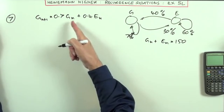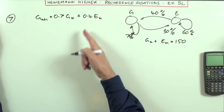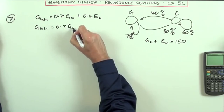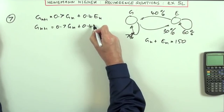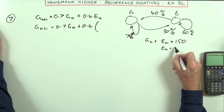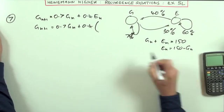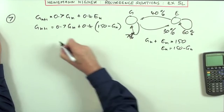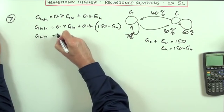Which means if I want to express this just in terms of G_n, I can rearrange that. I've got G_n+1 will be 0.7 G_n plus 0.4 of, now E_n and G_n make 150. So E_n must be 150 minus G_n.